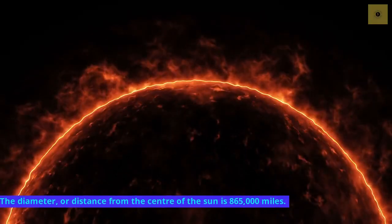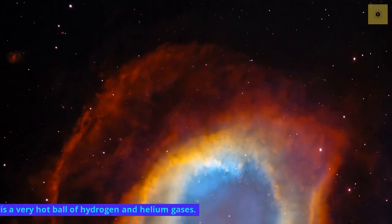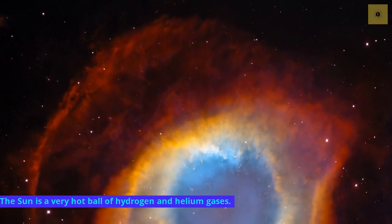The diameter or distance from the center of the Sun is 865,000 miles. The Sun is a very hot ball of hydrogen and helium gases.